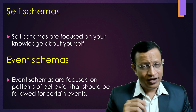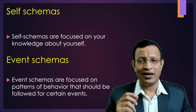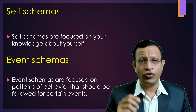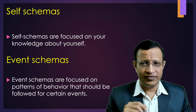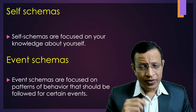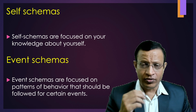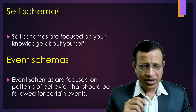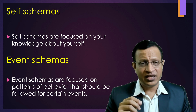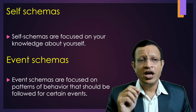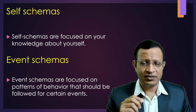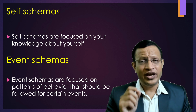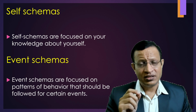Self schemas are where the majority of psychopathology arises in a human being. Self schemas are focused on your own knowledge about yourself — how do you interpret yourself, how do you evaluate yourself. That matters most. Coming to event schema, event schemas are focused on the pattern of behavior that should be followed after certain events. These are the four types of schemas, but the most essential is self schemas.